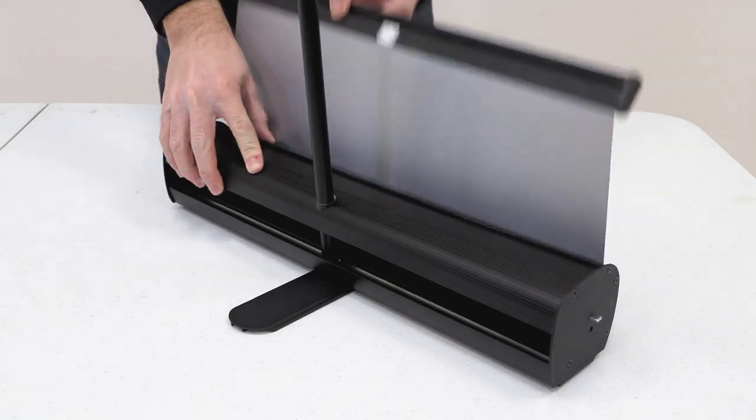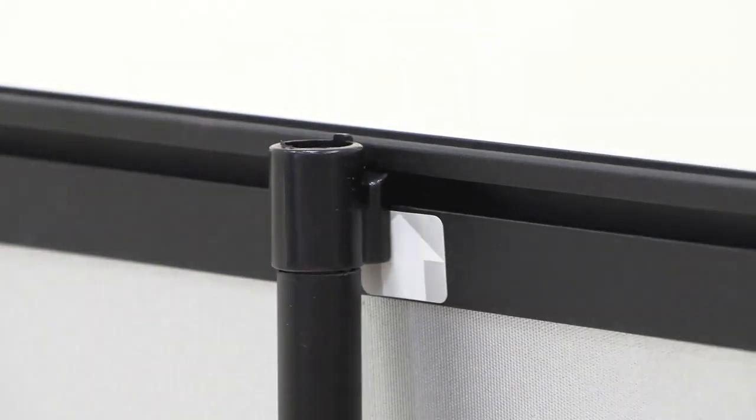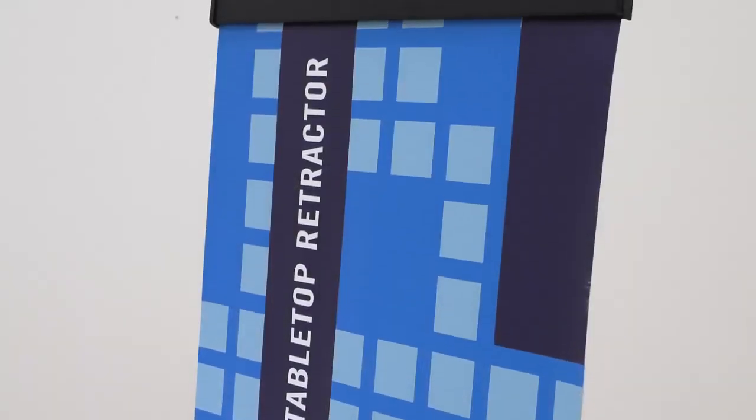Next, pull up on the top rail to extend your graphic. The lip of the pole affixes in the channel of the top rail, and with that your display is now assembled.